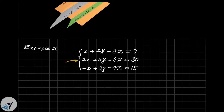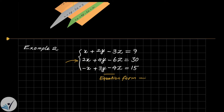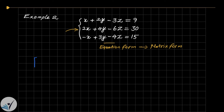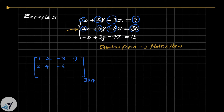The first step is to transform this equation form to matrix form. The matrix form would be a three-by-four augmented matrix. On the first row we have 1, 2, -3, and 9. On the second row we have 2, 4, -6, and 30. On the third row we have -1, 3, -4, and 15.